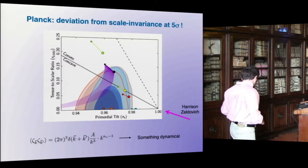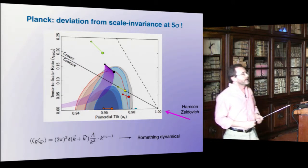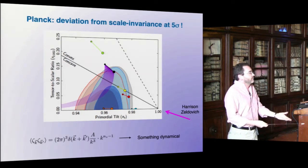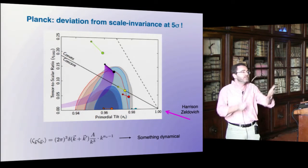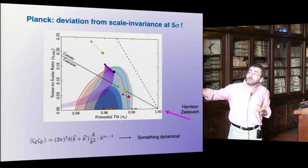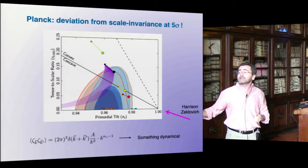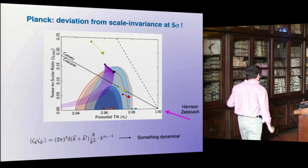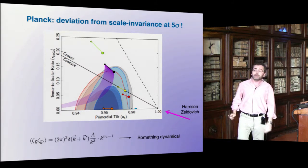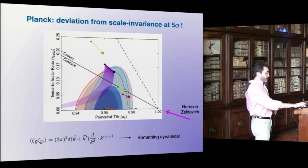Why is this important? Scaling invariance was not a prediction of inflation — it was invented in the 70s by Harrison and Zeldovich, and it's just the simplest fit to what you see in the sky, not really theoretically justified. To see a deviation from this means, first of all, it's a kind of prediction of inflation. It tells you that inflation is a period of expansion of the universe that will later finish — you need something dynamical, so you need a deviation from scaling invariance. I think this is a big step, probably the biggest since we saw the peaks about 10 years ago.